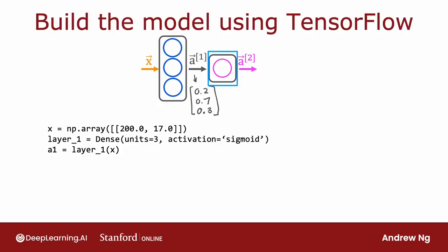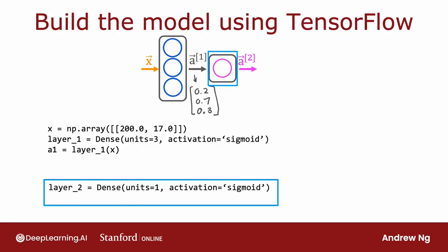Next, for the second hidden layer, layer 2 would be dense of, now this time it has one unit, and again, the sigmoid activation function. And you can then compute a2 by applying this layer 2 function to the activation values from layer 1 to a1. And that will give you the value of a2, which for the sake of illustration is maybe 0.8.